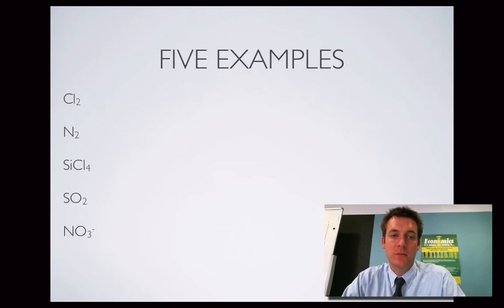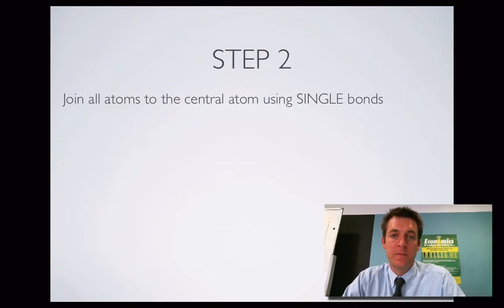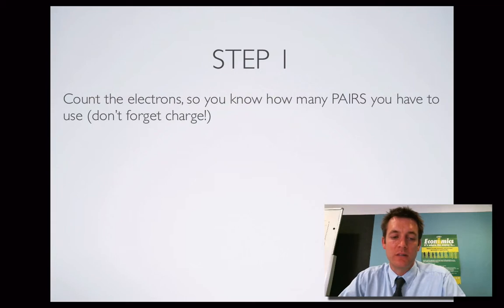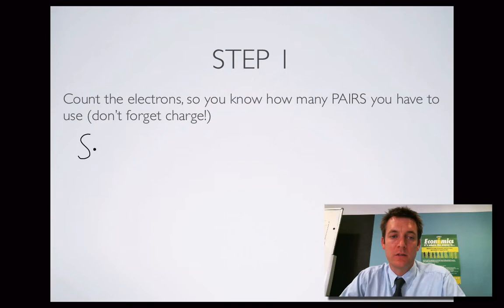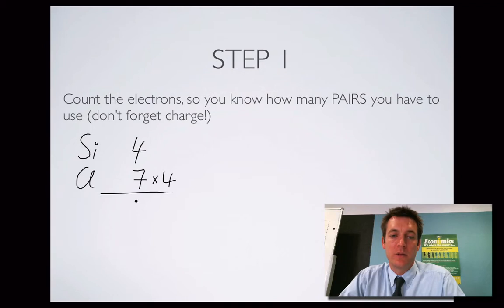Next example is SiCl₄. This time we do have a central atom. Silicon is in group four and chlorine is in group seven. We have four Cl atoms, so seven times four gives 28, plus four for silicon, making 32 electrons altogether — that's 16 pairs. We join all the atoms to the central atom using single bonds. The central atom is usually the one listed first, so Si is central and the four Cl atoms are joined to it.